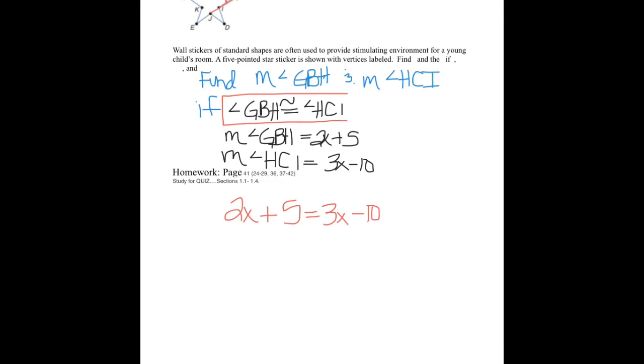So we're going to solve for X, plug back in, and find some angle measures. So I'm going to subtract 2X from both sides, and I find out that X equals 15. So the measure of angle GBH, 2 times 15 is 30, plus 5 is 35 degrees. And the measure of angle HCI is 3 times 15, or 45 minus 10, which is 35 degrees. And that's what we needed because if they didn't come out to be equal, we would have been in trouble.